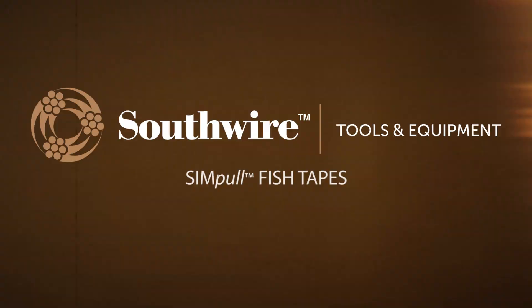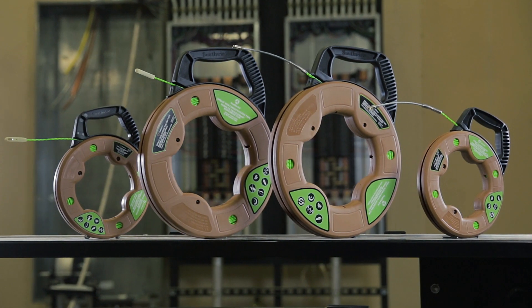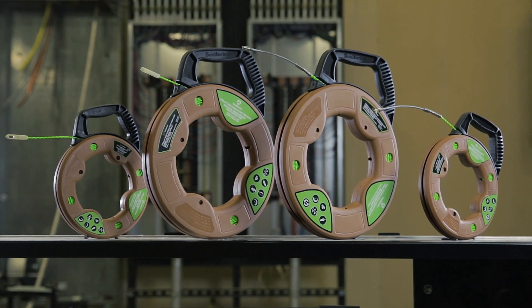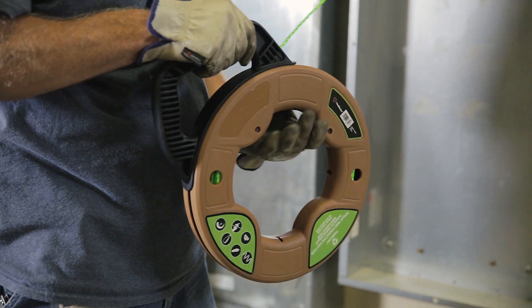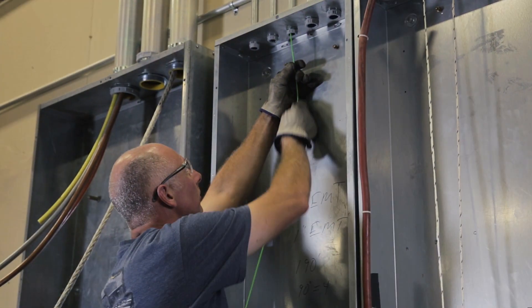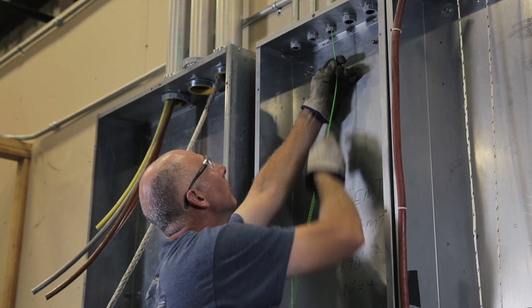The Southwire Simple Fish Tape provides a faster, easier way to push and pull fish tapes through EMT and PVC conduit. The low-friction spiral extruded polymer allows the tape to easily glide through conduit without binding at turns and joints.